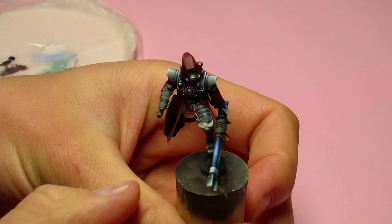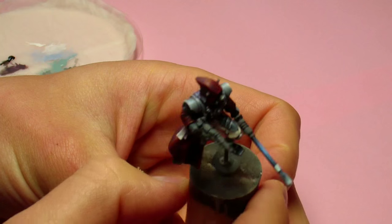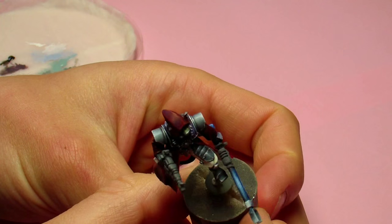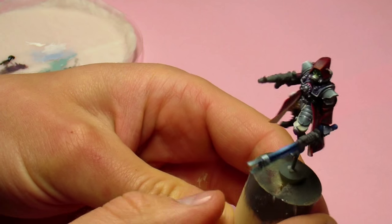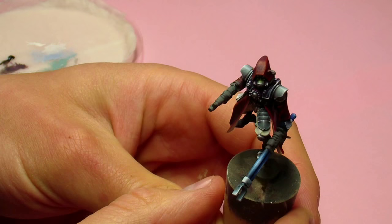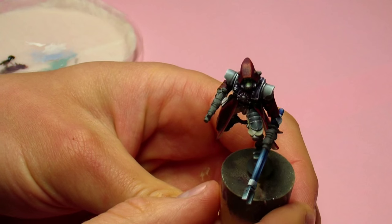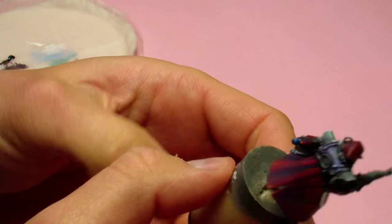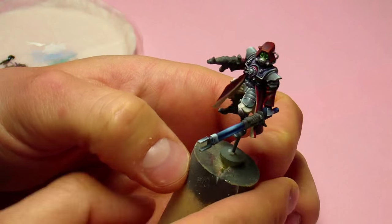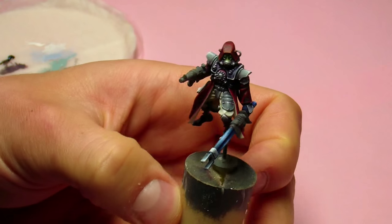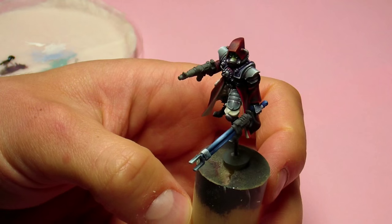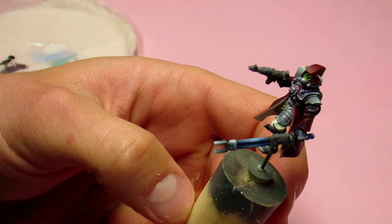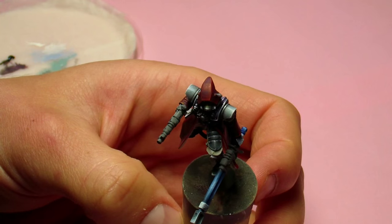So here we have the final result. As you can see here are the shoulder pads and the knee pad and chest. It's all painted with the same set and the same technique. So yeah, I hope you like this little tutorial. If so, please share it with your friends. Don't forget to hit the like button. And as always see you in the next video. Cheers guys!